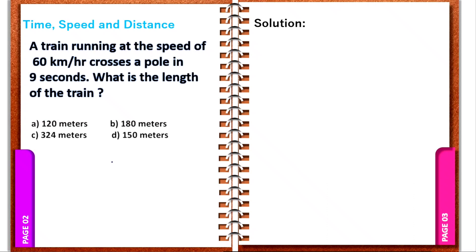If you look at the diagram, it's easy to see. The train running at the speed of 60 km per hour crosses a pole in 9 seconds. This is a time, speed, and distance problem. Now, we can find out the length of the train.